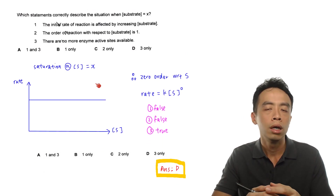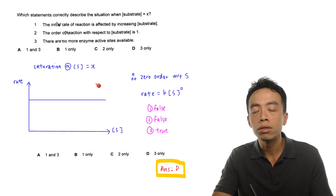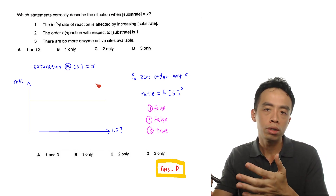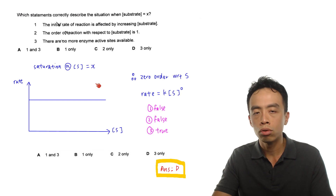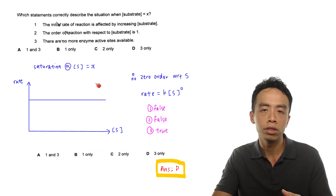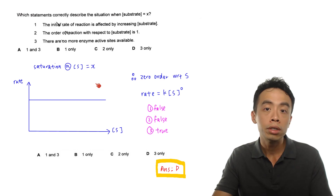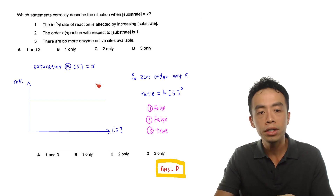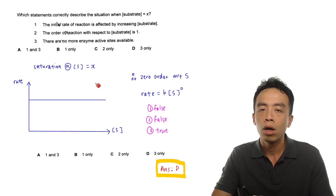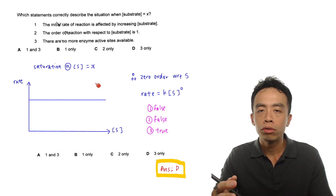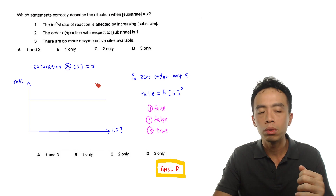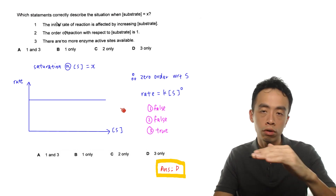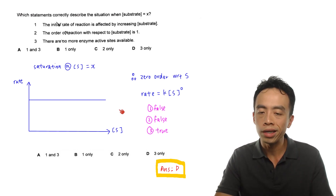Saturation occurs when the concentration of substrate exceeds the concentration of enzyme — too much raw material, not enough workers; too much substrate, not enough enzymes. When this happens, the rate of the reaction will no longer change when you increase substrate concentration, because all the enzymes are working at full capacity — all the active sites are fully utilized. Therefore, as you increase substrate concentration, the rate of reaction remains constant — a horizontal value at saturation.